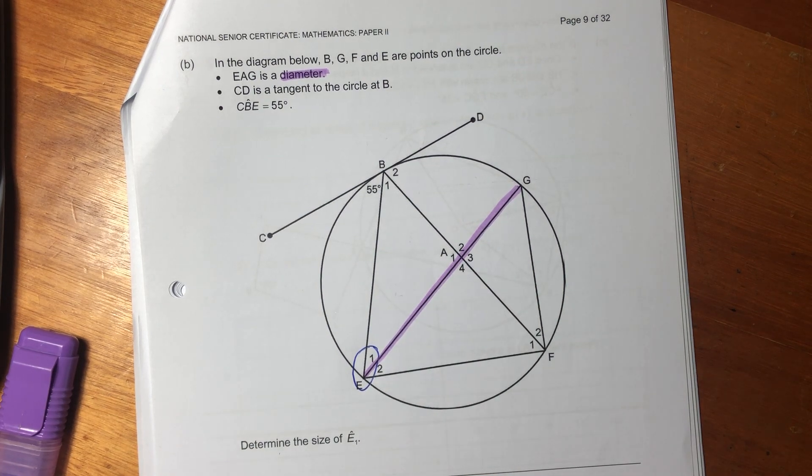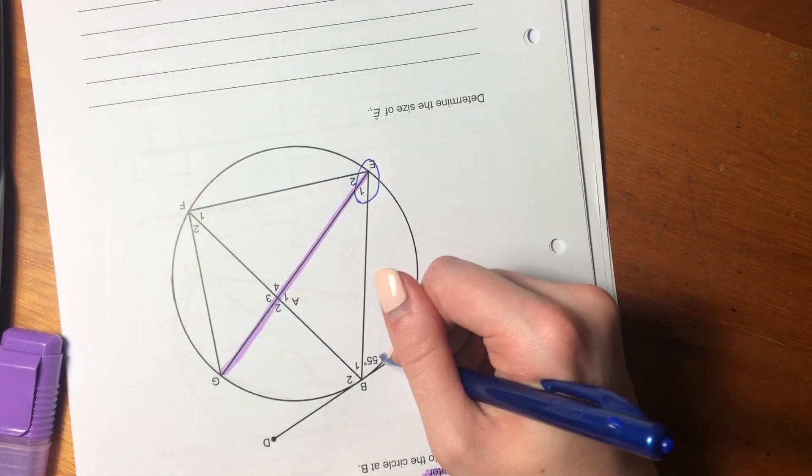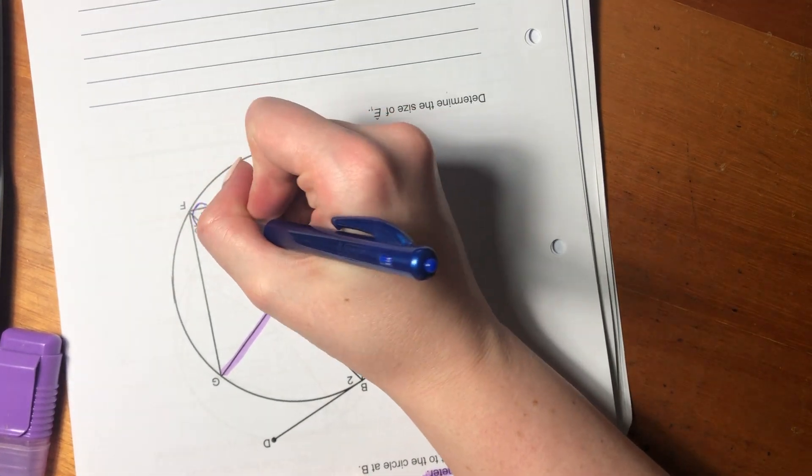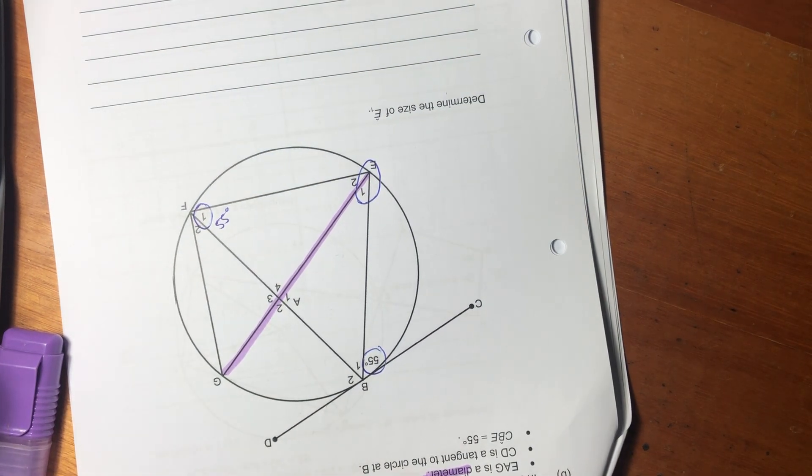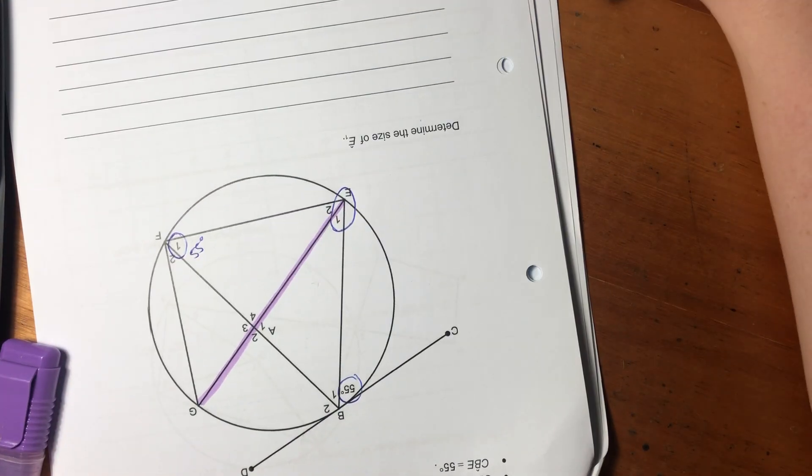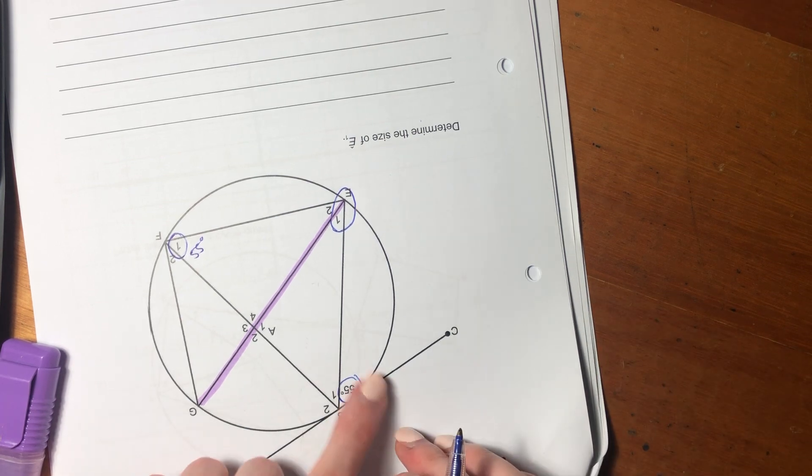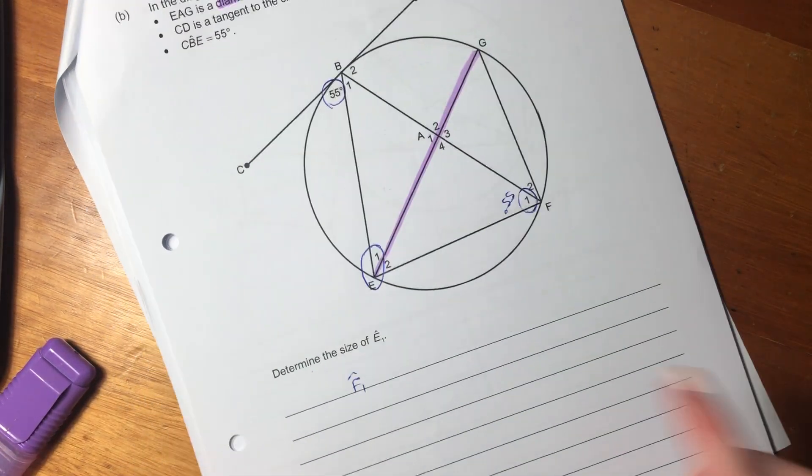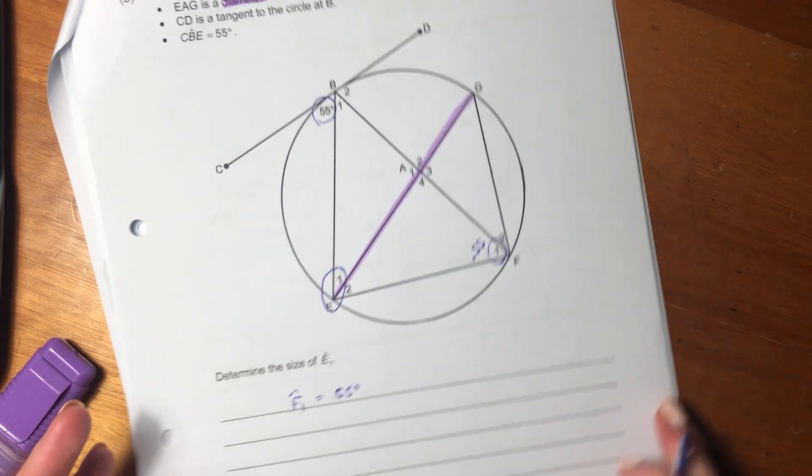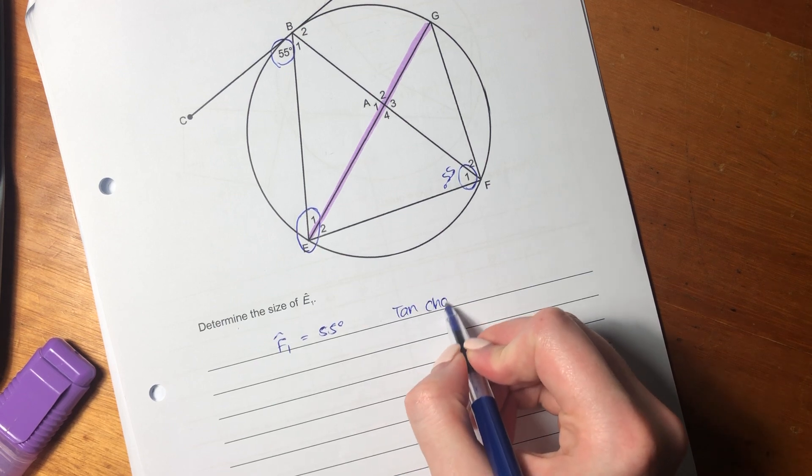So let's firstly do a bit of a switcheroo here so that we can see what's going on. So 55 is going to equal F1. Because of tan chord theorem. We just proved that in our previous question. We proved that this equals that. So it shouldn't be something that you're like, oh, I've never heard of that in my whole life because we literally just looked at it. So F1 is going to equal 55 degrees because of tan chord theorem.